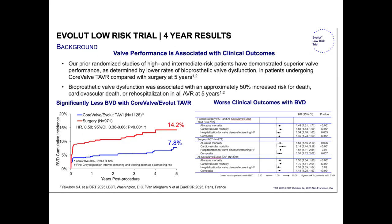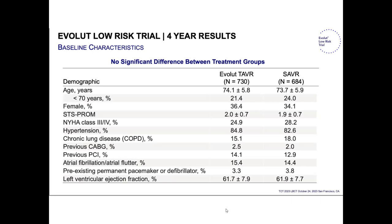For the Evoluted Low-Risk trial, there was no significant difference between groups. The mean age was 73-74 years old. Patients under 70 represented approximately 20% of the cohort — about the same proportion in the PARTNER trial. Approximately 30% — as in all cardiovascular trials — represent female patients. There's no difference in ejection fraction between groups.